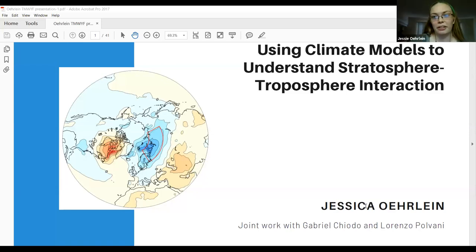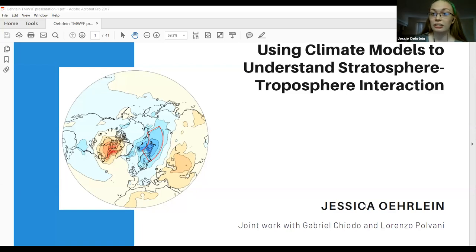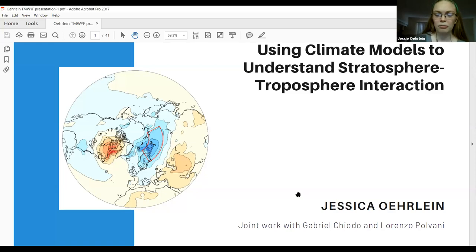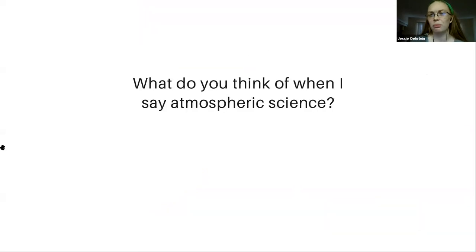I'll be talking about using climate models to understand the interaction between two different layers of the atmosphere. Some of this later will be talking about work that I did with Gabriel Chiodo at ETH Zurich and Lorenzo Polvani at Columbia. I want to start by asking what you think of when I say atmospheric science, because this is a pretty broad term. What comes to mind for you all? Feel free to answer out loud or in the chat.